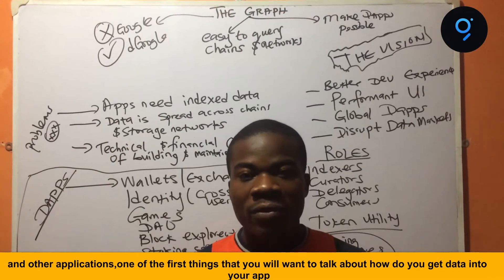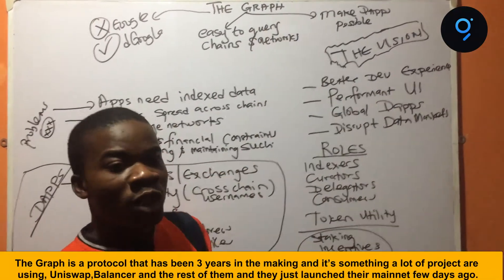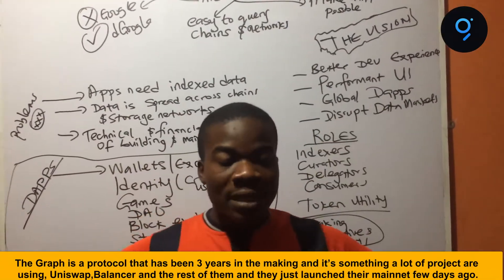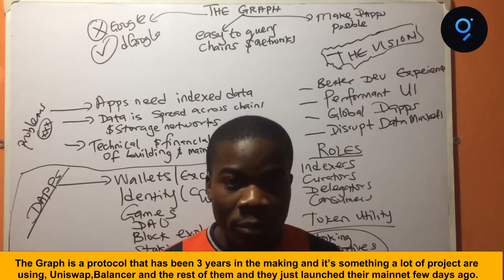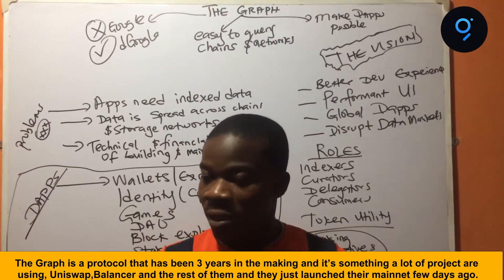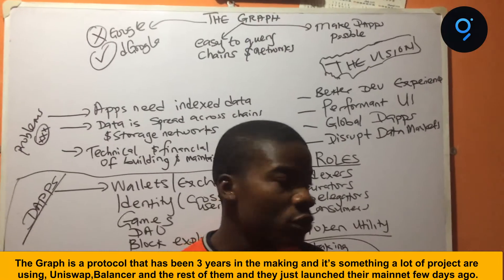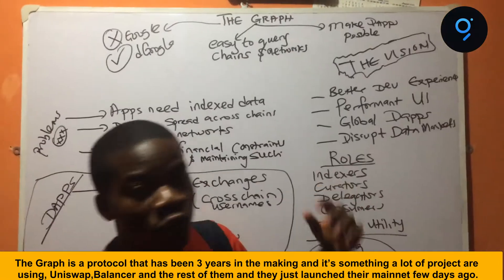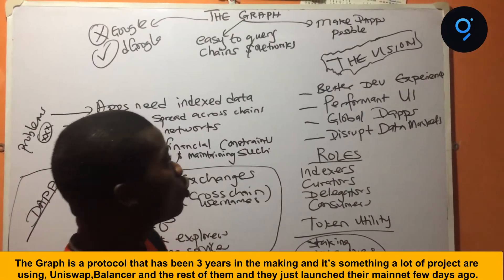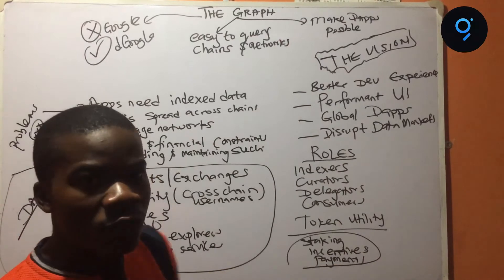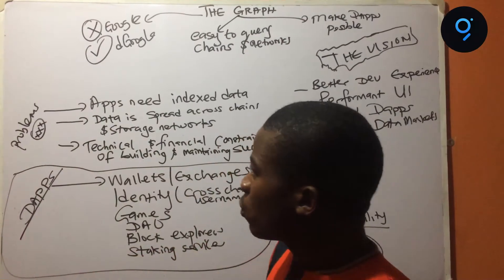There are users on the platform and so on. So The Graph is actually a protocol that has been years in the building, and it's something that a lot of projects are using — Uniswap, Balancer and the rest of them are already using this. And they just launched a few days ago. So we want to give a brief five-minute overview of what is The Graph network.